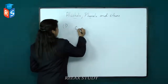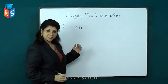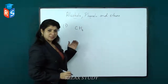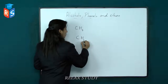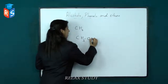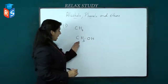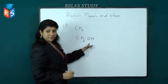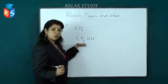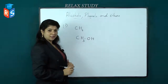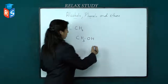CH4 is methane. When one of the hydrogen atoms from CH4 gets replaced by an OH group, it becomes methyl alcohol. Methyl alcohol contains only one OH group, so this is a monohydric alcohol — specifically, an aliphatic monohydric alcohol.